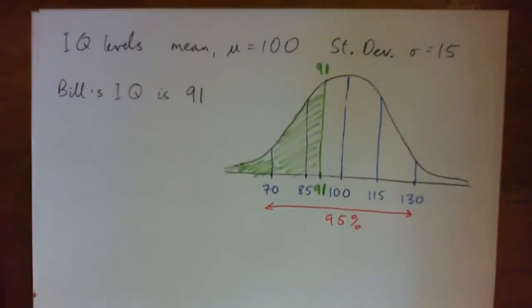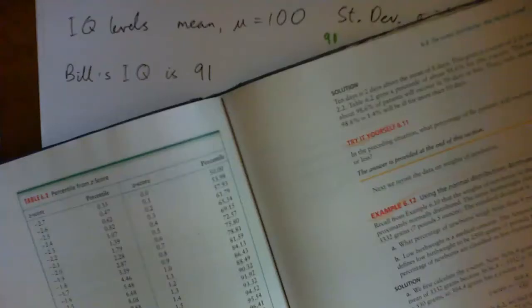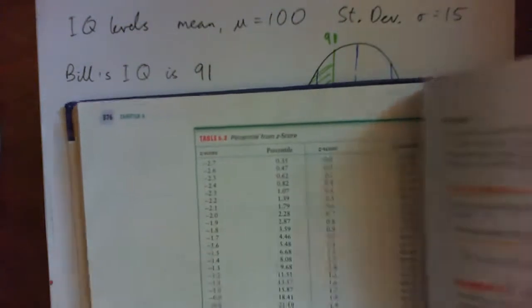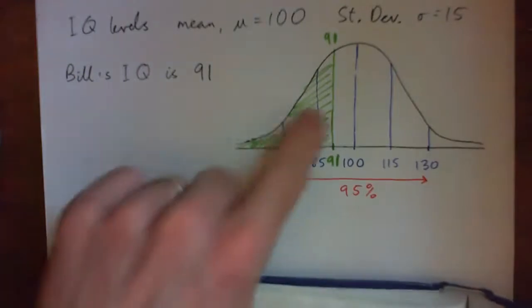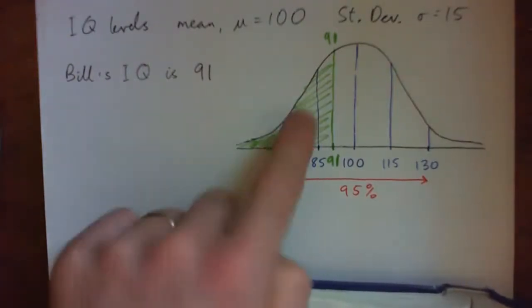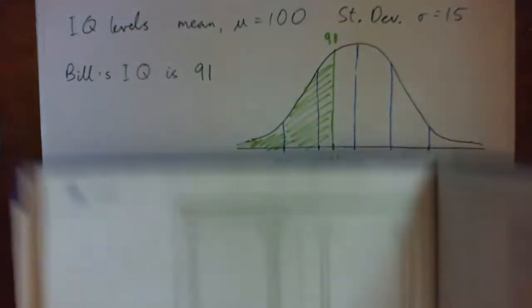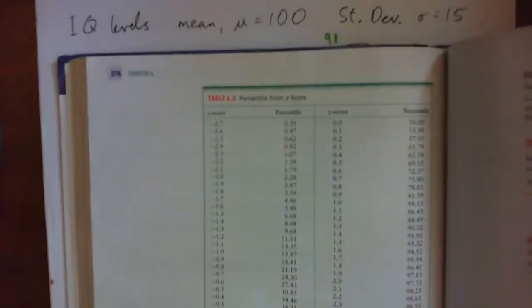But let's figure out what percent score less. So we'll have to look up our Z table for that. So looking in the book page 376, you see the Z table. And we're going to use this Z table to figure out what percent he's above and what percent he's below. We'll just do both, just to beat it to death, so we totally understand it.